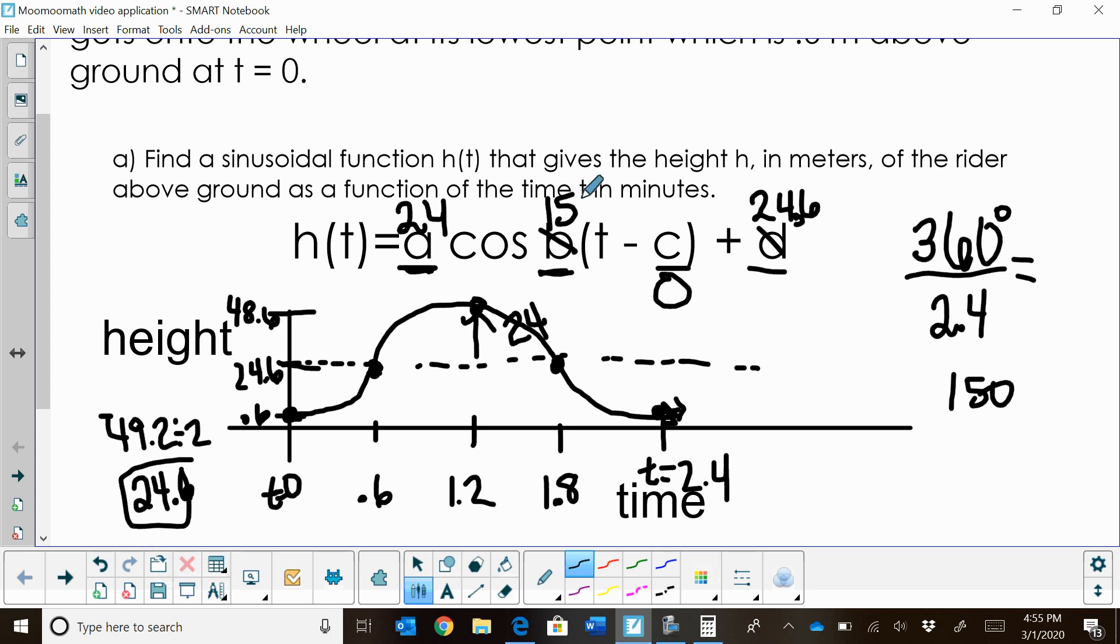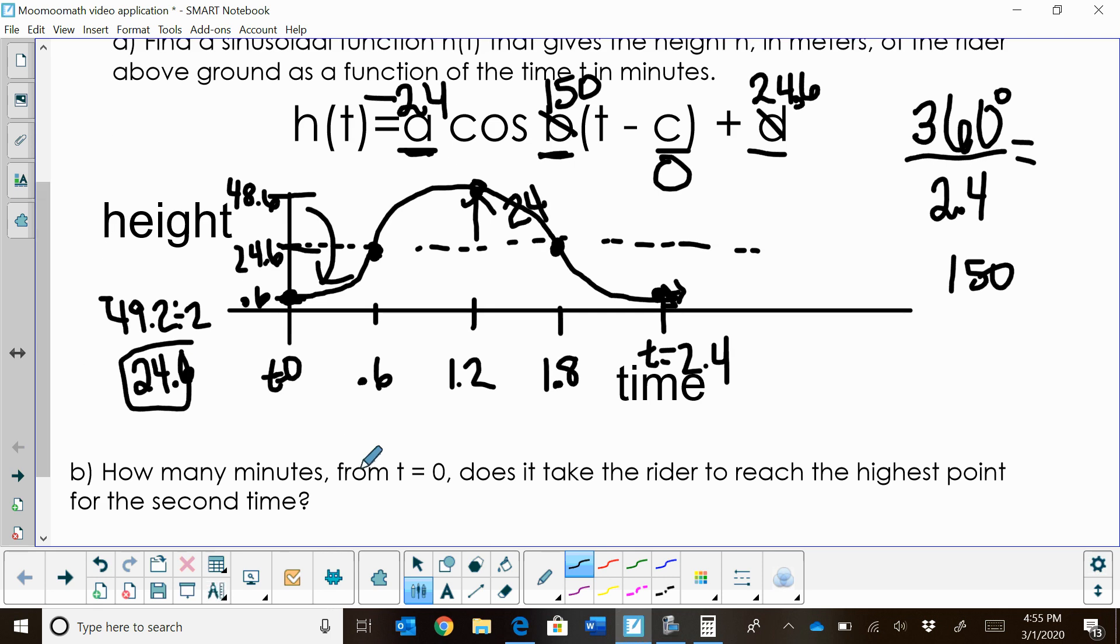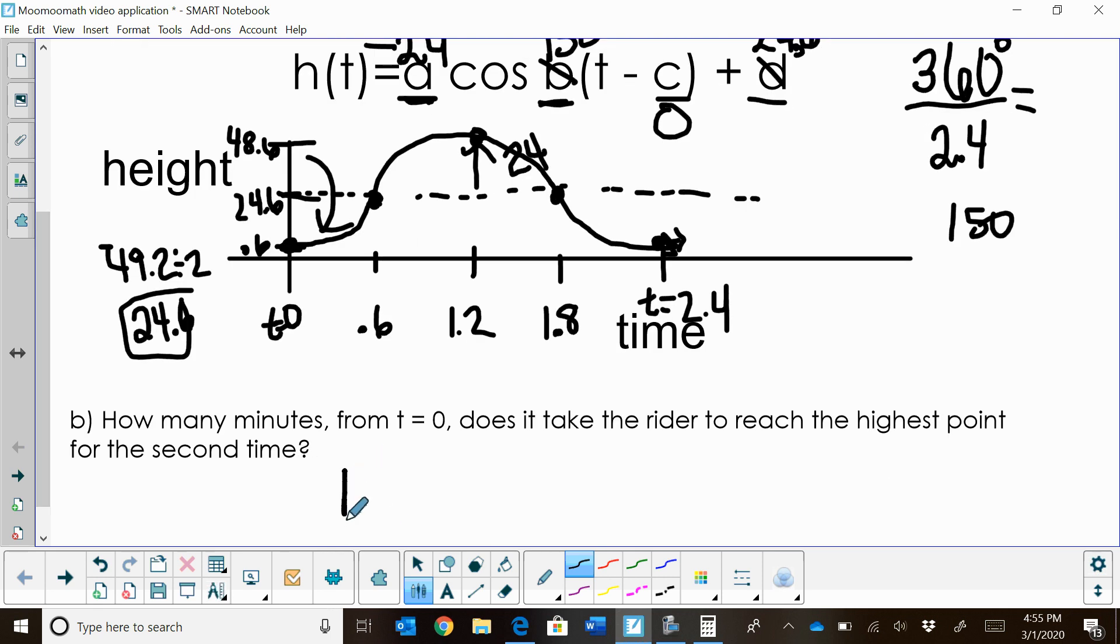Now, the one thing I do need to account for is the fact that I am starting at the bottom of the cycle for cosine instead of the top of the cycle. So this one is reflective. A is also going to be negative because I have a reflection. So let's write out the whole equation. Our function in relation to time is negative 24. Our amplitude is 24, not 2.4.